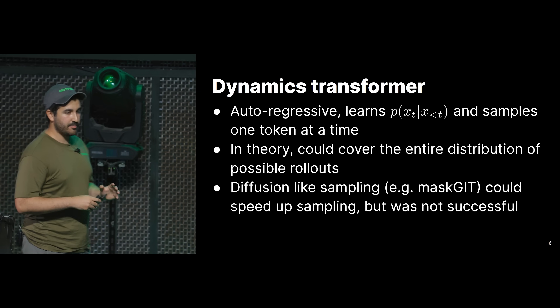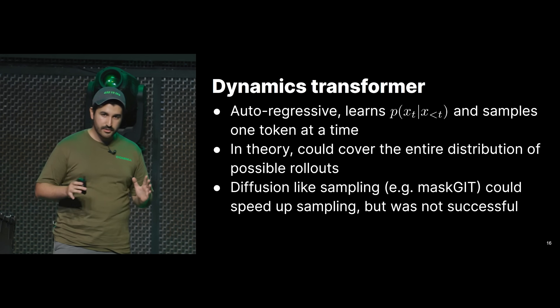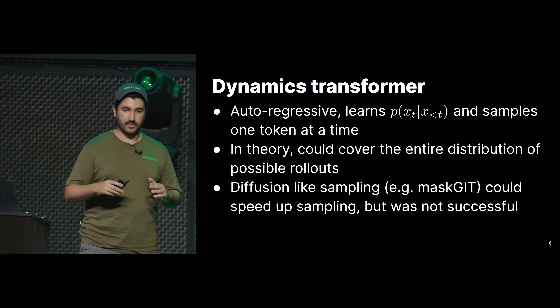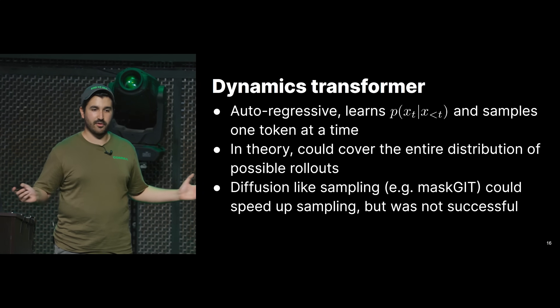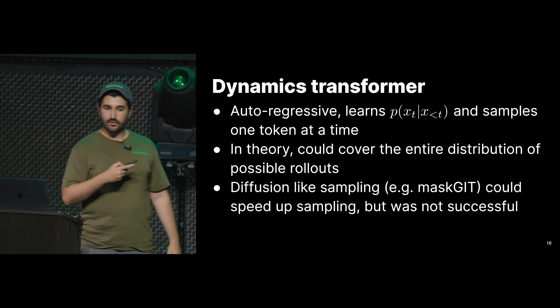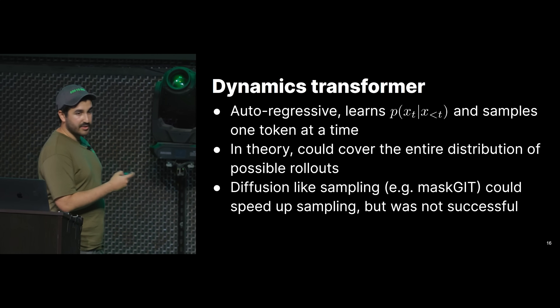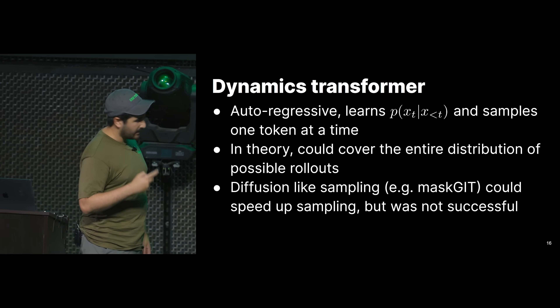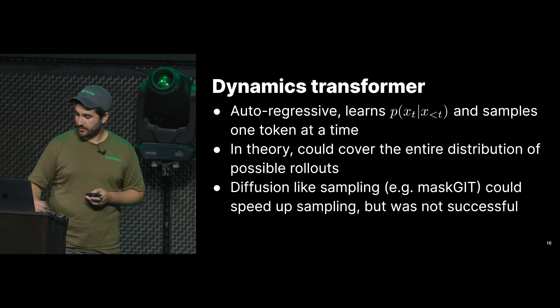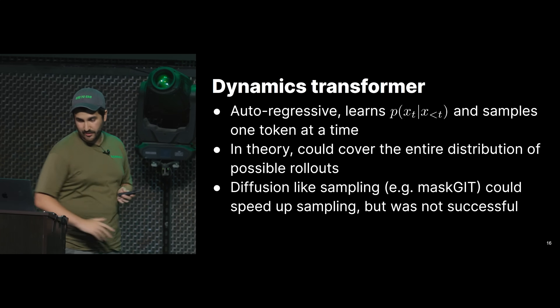Autoregressive sampling is really powerful because you could cover the whole distribution of your training set — covering the whole distribution of possible rollouts given a context of a few frames. This could imagine any type of future, which is really desirable because you don't want to restrict what happens next. We tried a few things to speed up autoregressive sampling — diffusion-like sampling, some fancy masking techniques — but we didn't really succeed. We'll keep trying.